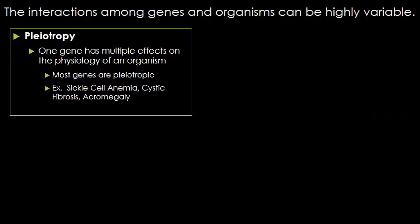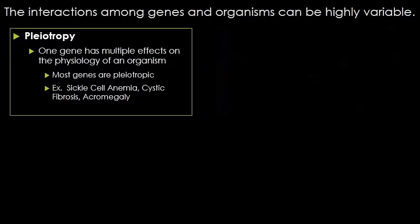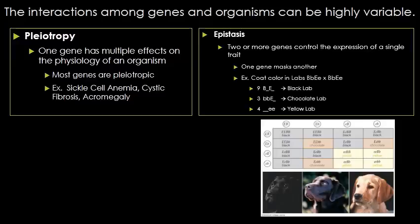The interaction among genes in organisms can be highly variable — this is the third major exception. Pleiotropic traits are when one gene has multiple effects. Cystic fibrosis, for example, is a mutation of a single gene that causes changes in the lungs and a wide variety of other conditions. Sickle cell anemia changes the blood cell, which affects body behaviors, energy levels, oxygen carrying capacity, and a wide variety of other conditions. So pleiotropy means one gene with multiple effects.